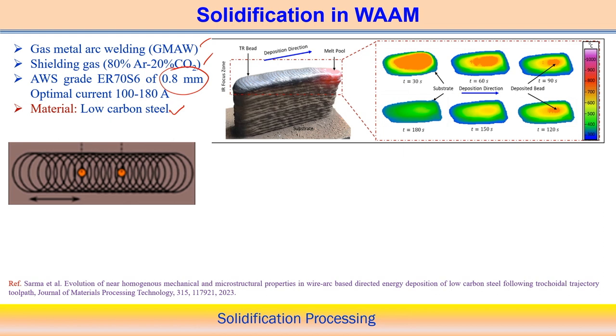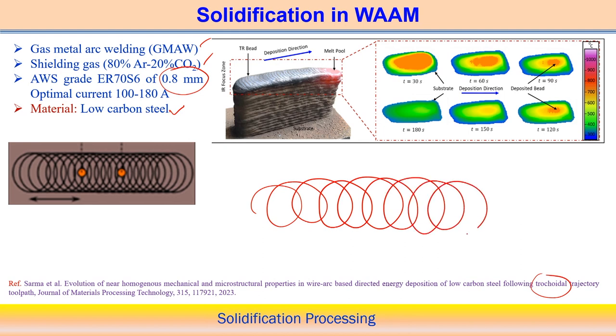We focus on the thermal behavior and the structure, which also depends on the tool path. A trochoidal trajectory is used — a kind of overlapping profile deposition with many overlapping passes. With this particular path, a near-homogeneous structure can be predicted in the case of low carbon steel deposition using the GMAW-based wire arc additive manufacturing process.